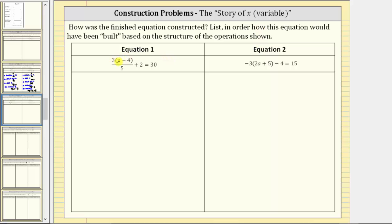For equation one, we have three times the quantity p minus four divided by five plus two equals 30. So for each construction story, we always begin with the variable, which in this case is p. Looking inside the parentheses, notice how we have p minus four, which means the first step is to subtract four from p. So step one, we subtract four.